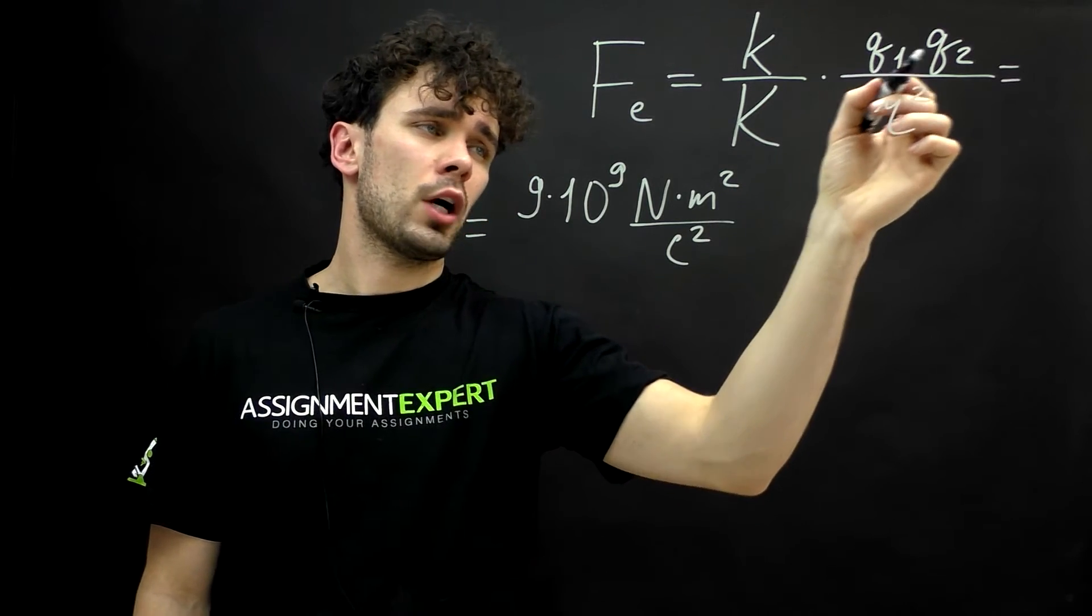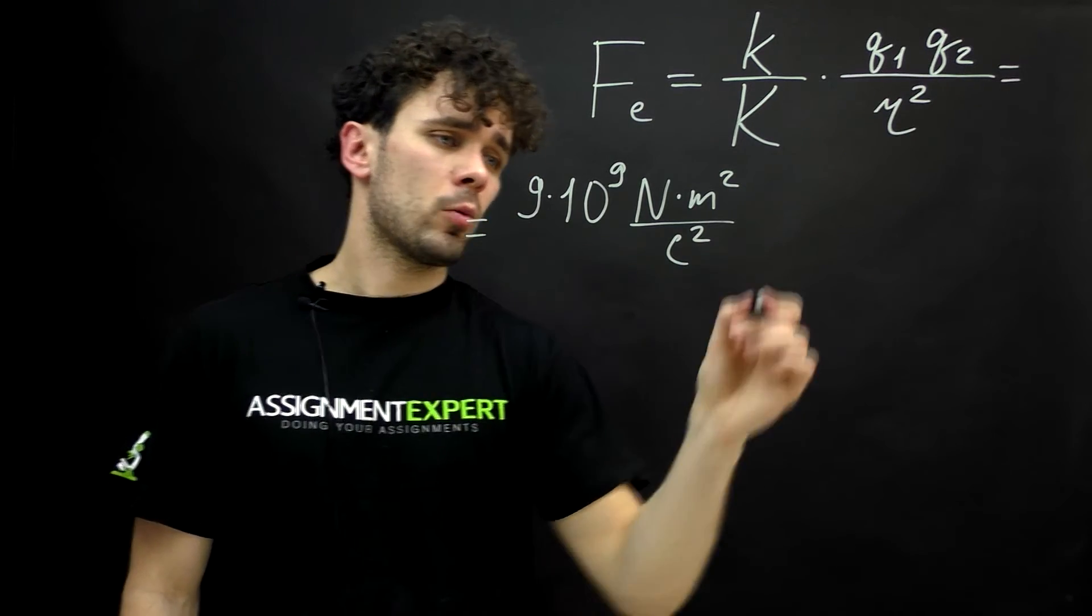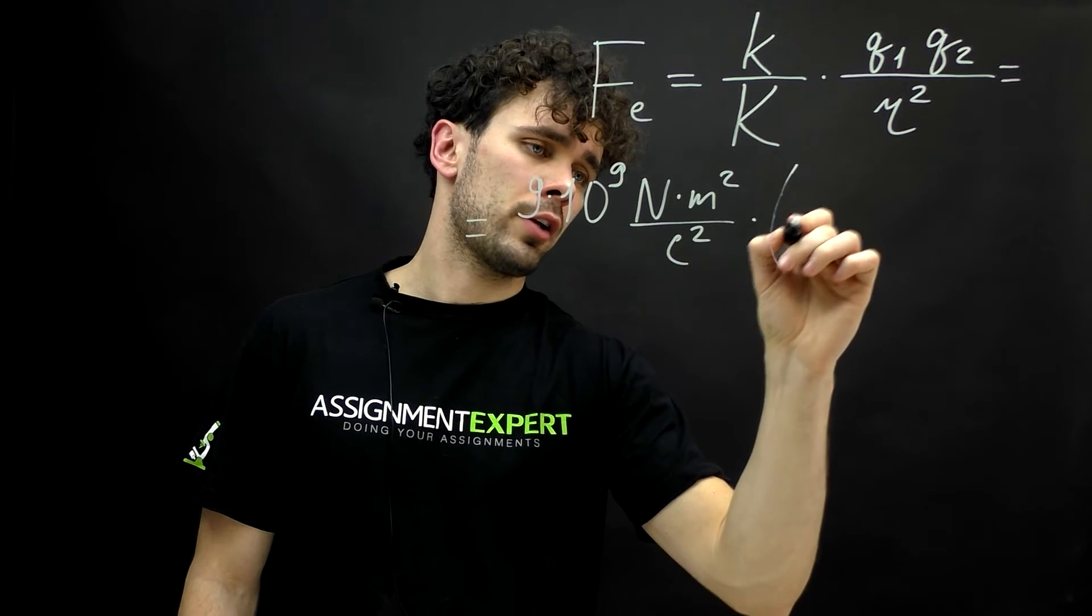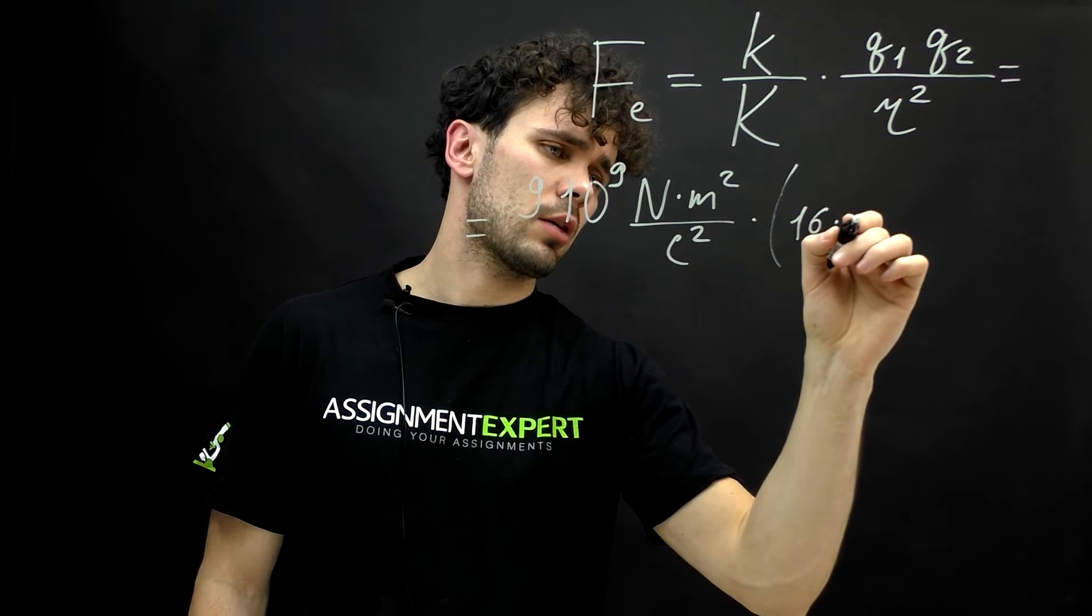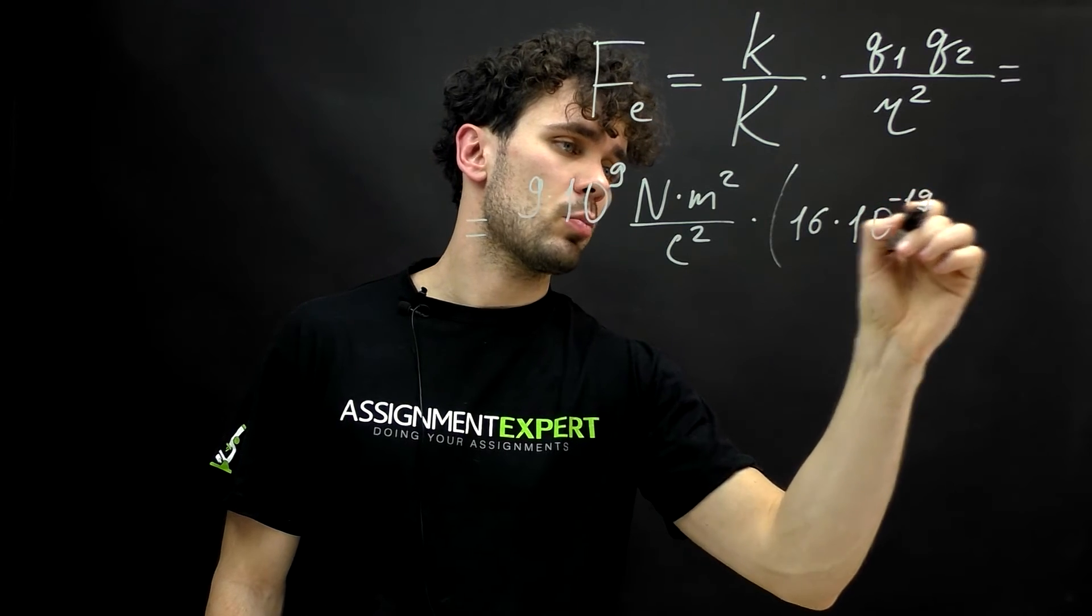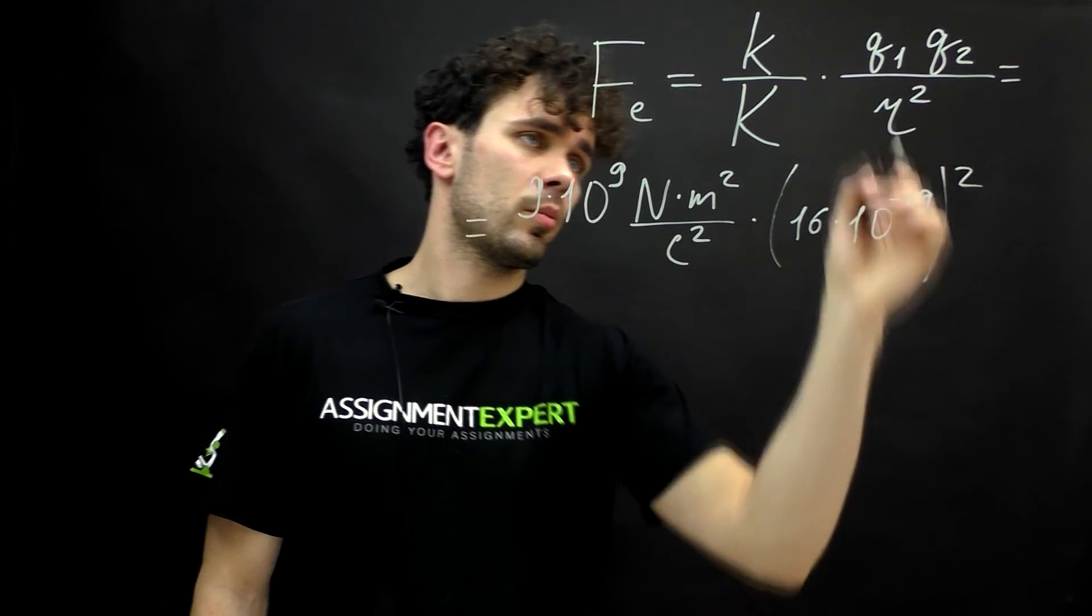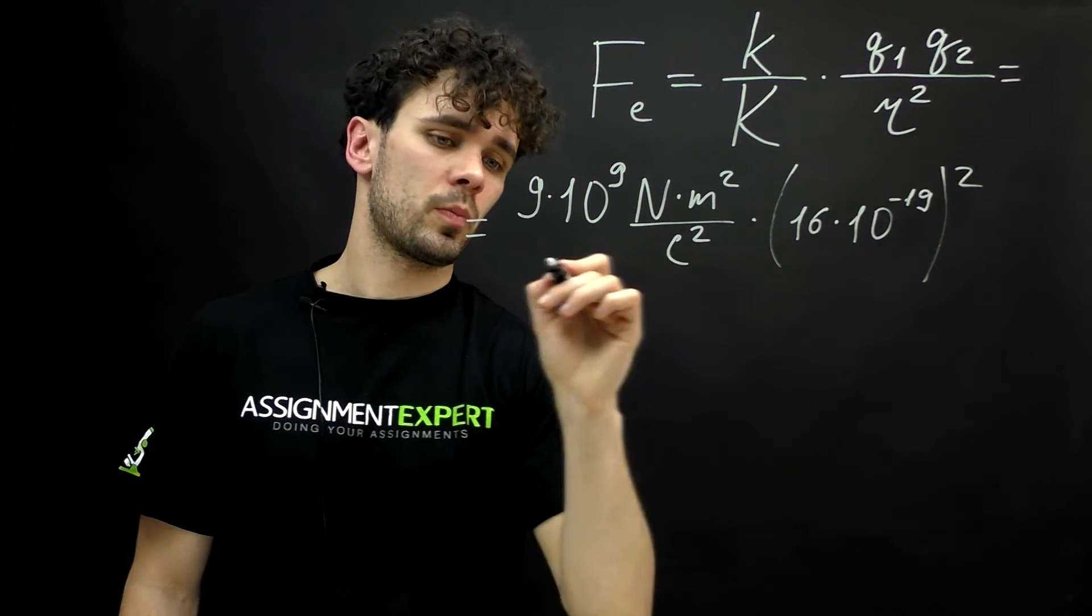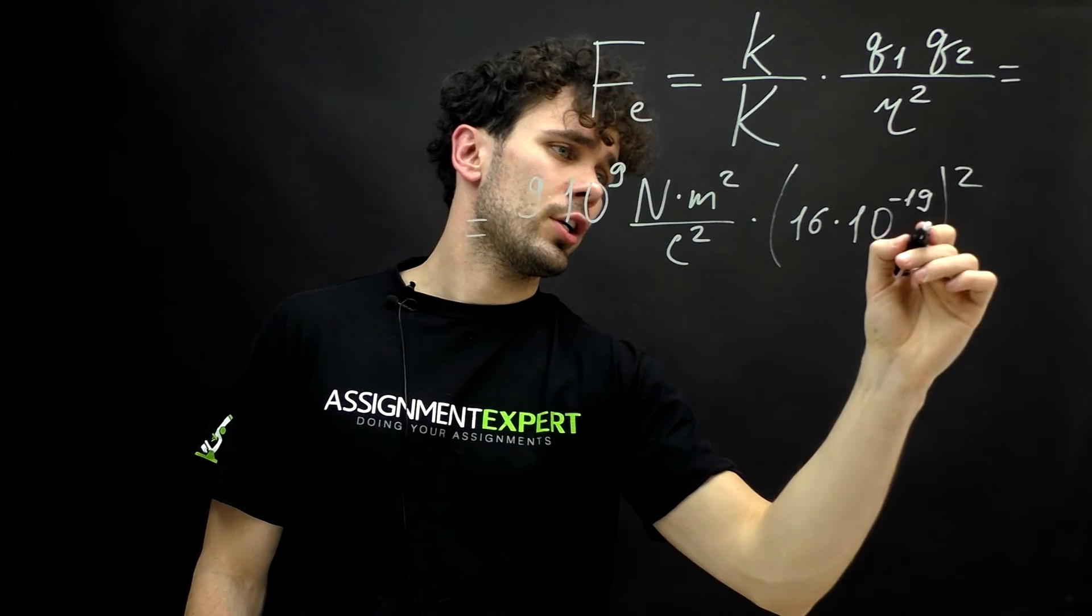Then we have q1 and q2. They're equal, so let's write it like this. 16 times 10 raised to the negative 19th power squared. Because we have q1 and q2. And the measurement here is coulomb.